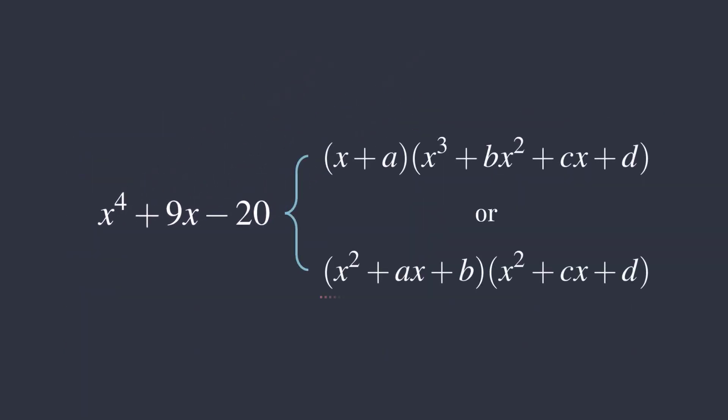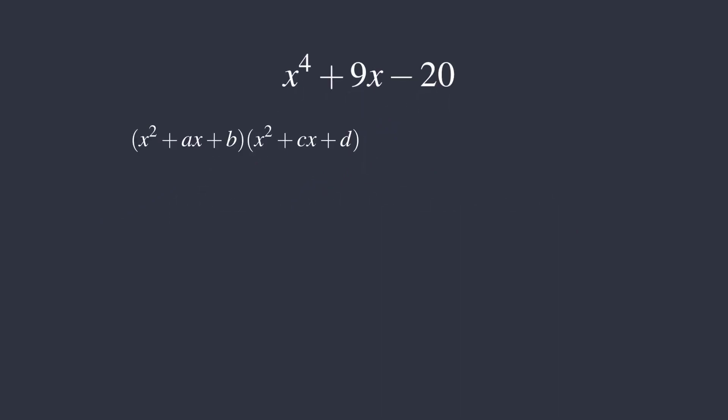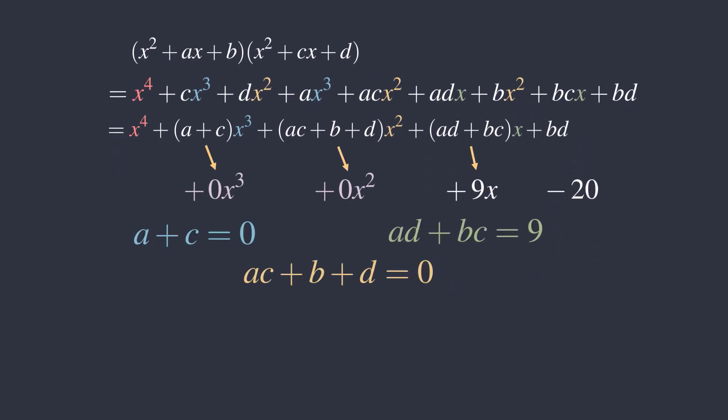So we must have case 2, the product of two quadratics. Now, multiplying out this product, we get all these terms. Combining like terms, we have this. Then matching the coefficients, we obtain this nonlinear system.